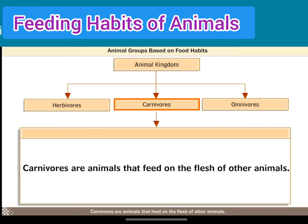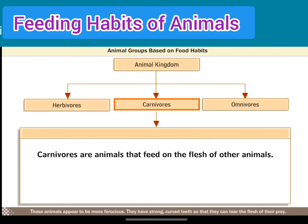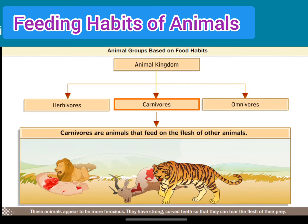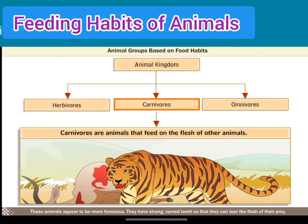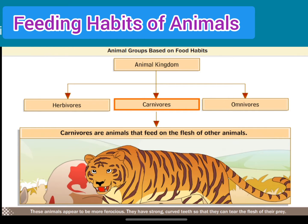Carnivores are animals that feed on the flesh of other animals. These animals appear to be more ferocious. They have strong curved teeth so that they can tear the flesh of their prey.